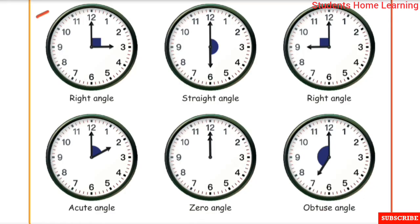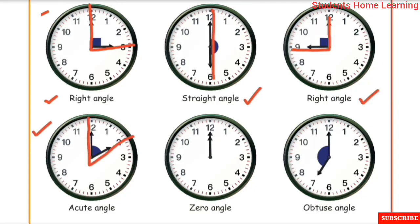First one: the angle is L-shape — L-shape is a right angle. The angle is straight — that is a straight angle. The angle is L-shape. This is a right angle. That is an acute angle. The angle has 2 lines — that is a zero angle. This is an obtuse angle.